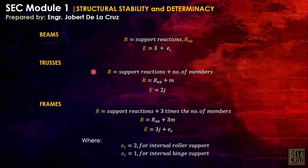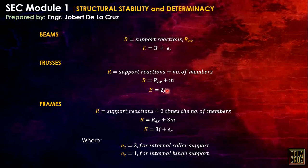For trusses, R equals the support reactions plus the number of members M, because at every member we have only one internal force — the axial force. The equilibrium equations equal twice the number of joints, 2J, because at every joint we can only use summation of forces X and summation of forces Y, since the moment at that point is zero.